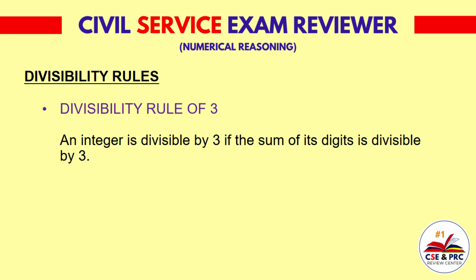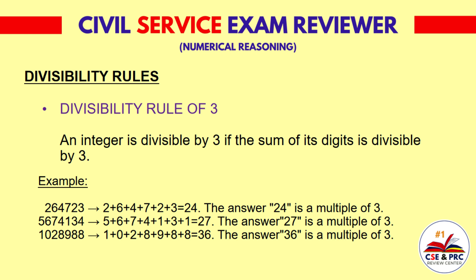Divisibility Rule of 3: An integer is divisible by 3 if the sum of its digits is divisible by 3. For example, the number 264,723 is divisible by 3 since the sum of its digits is 24, which is a multiple of 3. Another example, 5,674,134 is divisible by 3 since the sum of its digits is 27, which is a multiple of 3.